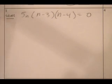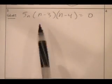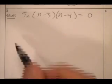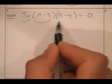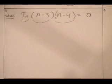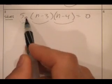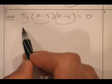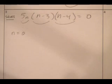Solve for n. Using the zero product property, I have three factors — this times this times this must equal zero. If any one of these is zero, the whole thing becomes zero. What would make five n equal zero? How about n equals zero? Five times zero is zero, and zero times whatever the other two terms are makes it zero. So n equals zero must be one of my solutions.